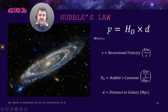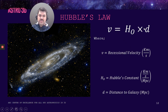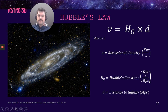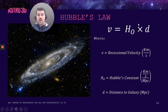Looking at Hubble's law: recessional velocity V, measured in kilometers per second, is equal to the distance D the object is away, measured in megaparsecs, multiplied by H₀. This constant H₀ is Hubble's constant, measured in kilometers per second per megaparsec. The objective of our activity today is to find Hubble's constant. To do that, we divide both sides by D, so V divided by D gives us Hubble's constant. If we do this for lots of objects and plot a line of best fit, our value should be closer to the true value.